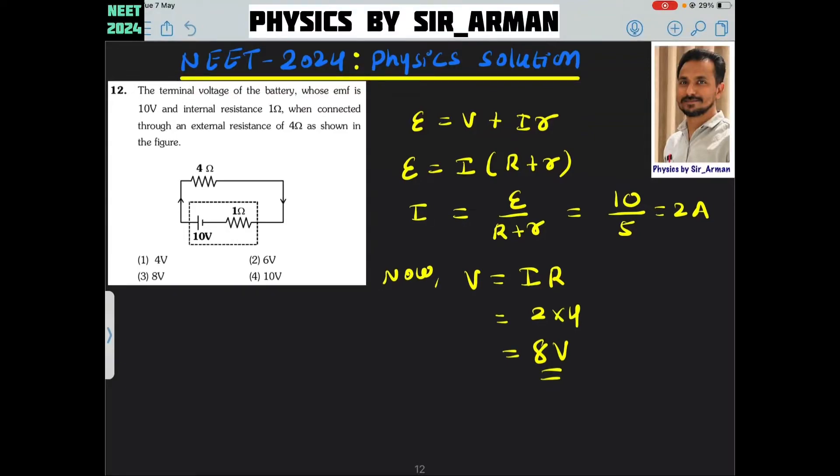Question number 12. A terminal voltage of a battery whose EMF is 10 volt and internal resistance is 1 ohm, when connected through an external resistance of 4 ohm as shown in figure, we have to find the terminal voltage.